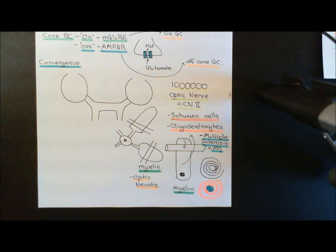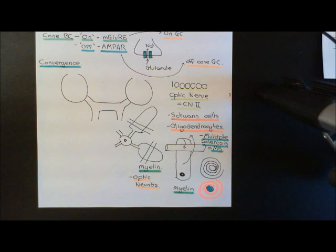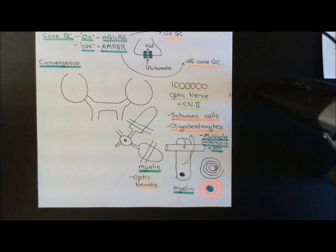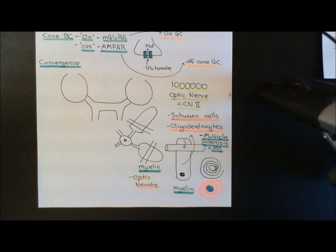We've also seen that once they arrive in the optic nerve, and not beforehand, they will become myelinated. We've discussed the fact that they are myelinated not by Schwann cells, as you might expect, but by oligodendrocytes. So really you should view the optic nerves as an extension of the central nervous system rather than as part of the peripheral nervous system.